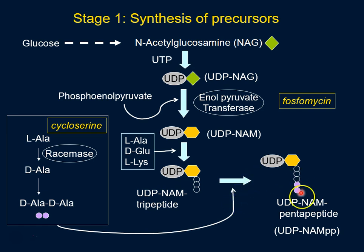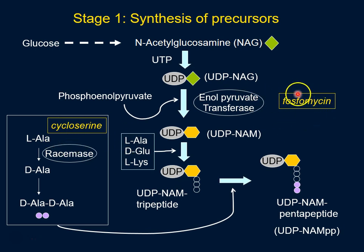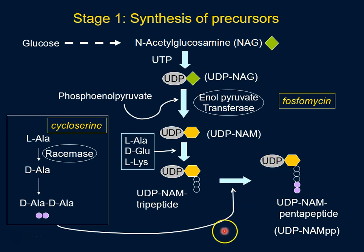That's how cycloserine is able to inhibit this critical step where the two additional amino acids are added. Without these two alanines, the cell wall will not be able to be put together. So there are two antibiotics to remember for stage one: phosphomycin, which inhibits enolpyruvate transferase, and cycloserine, which inhibits racemase — critical for the addition of the D-alanine dipeptide onto UDP-NAM tripeptide.